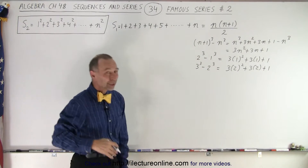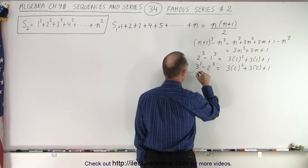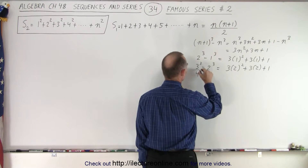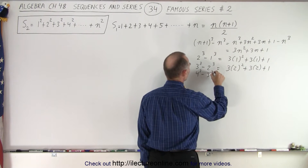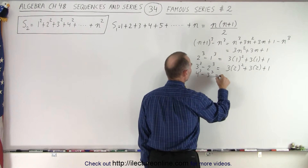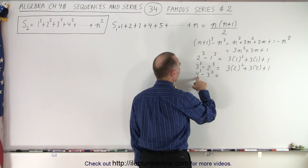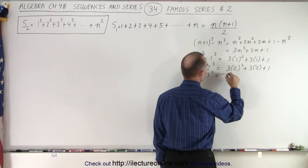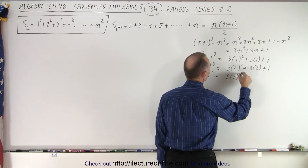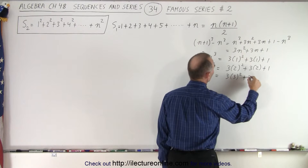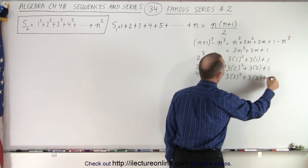We continue like this. Now we have 4 cubed minus 3 cubed is equal to — here n would be equal to 3 — so it would be 3 times 3 squared plus 3 times 3 plus 1.